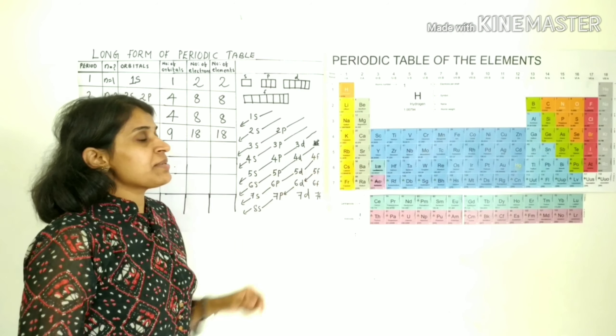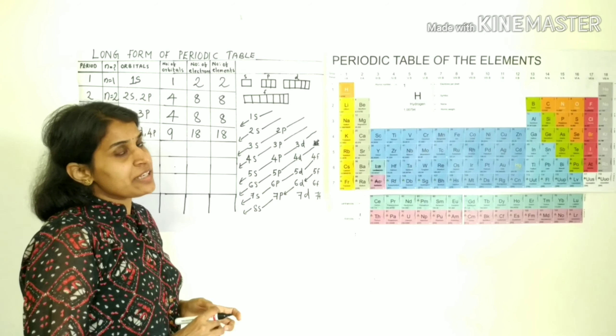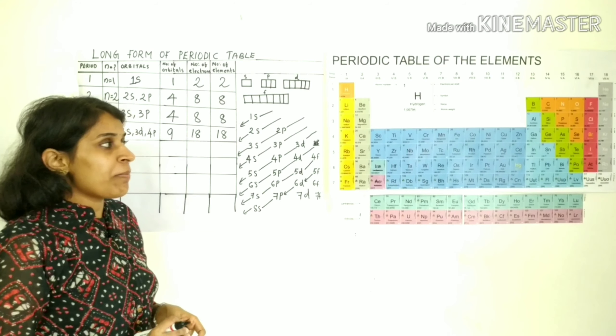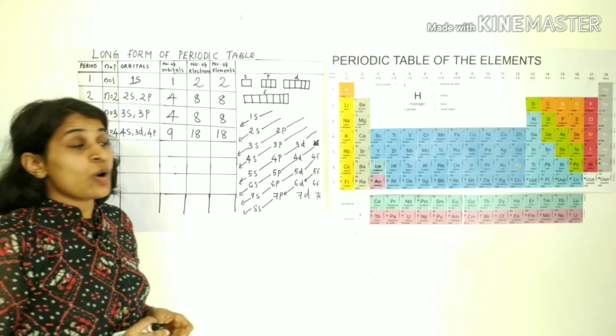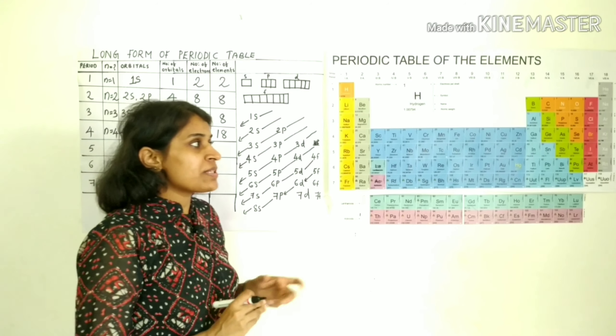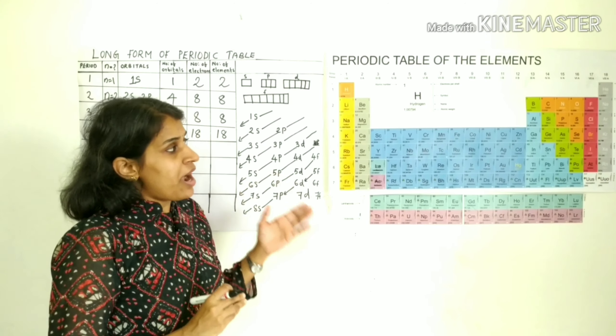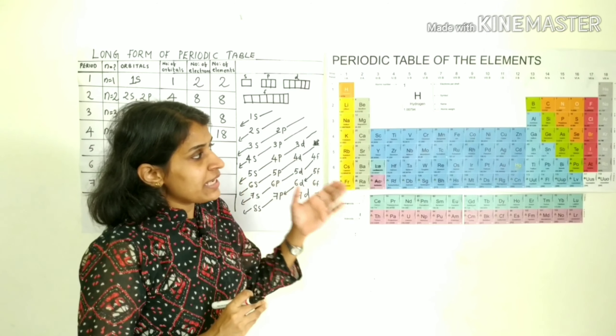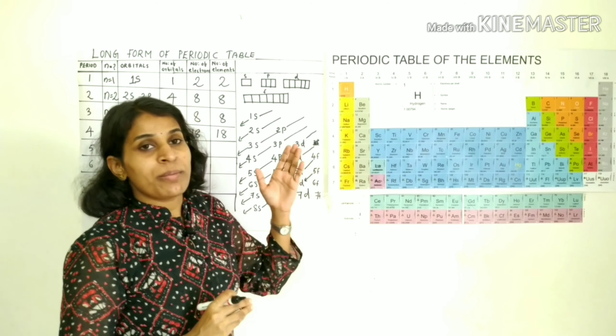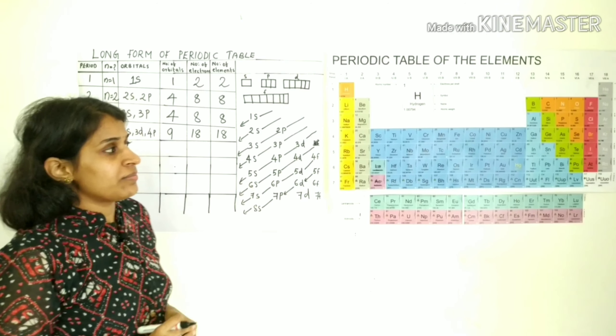The fourth period elements are: potassium, calcium, scandium, titanium, vanadium, chromium, manganese, iron, cobalt, nickel, copper, zinc, gallium, germanium, arsenic, selenium, bromine, and krypton.